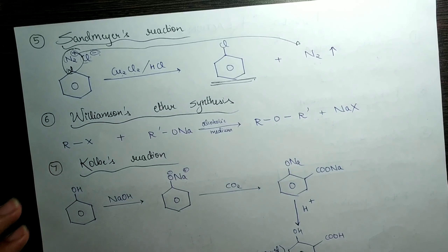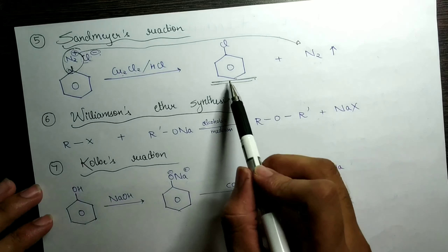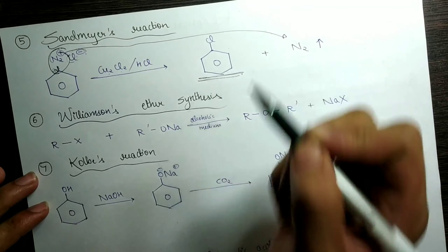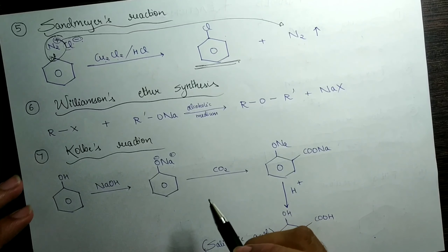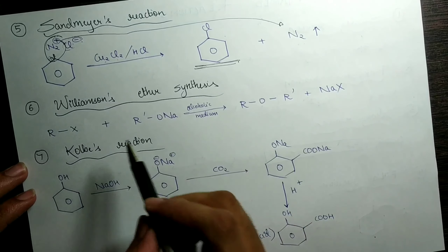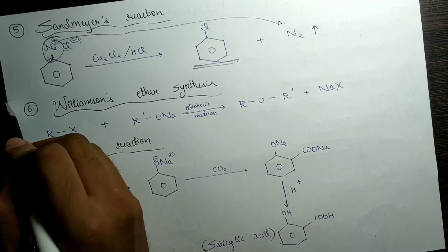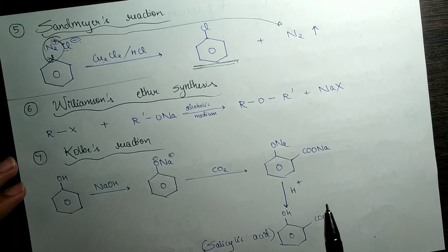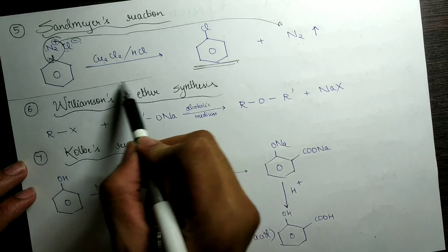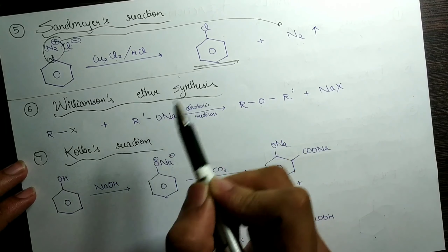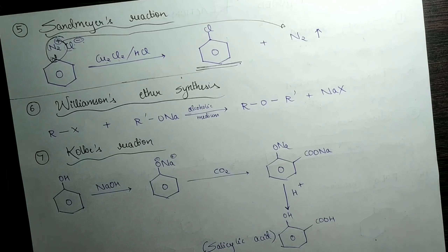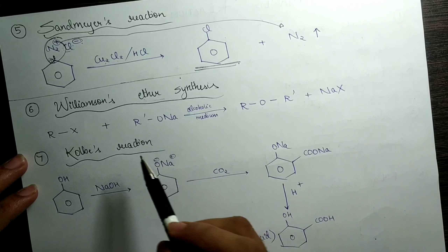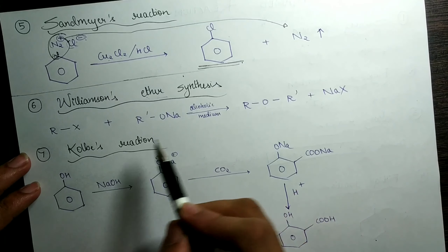There is another reaction I am not discussing in detail called the Wurtz-Fittig reaction. That is where you take one mole of haloarene and one mole of haloalkane, use the same medium of dry ether, and make it react with sodium. Then you get a compound where the benzene ring is joined with whatever alkyl group R you are taking. That reaction is called the Wurtz-Fittig reaction.